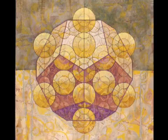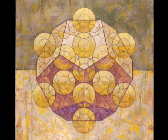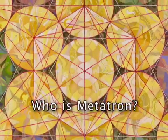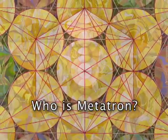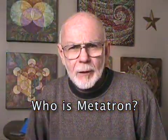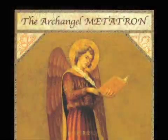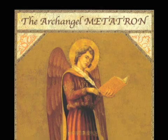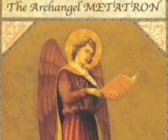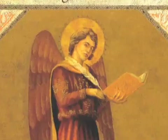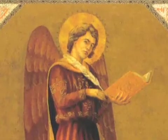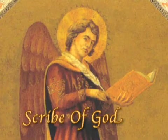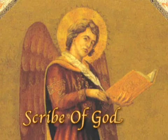So the first question is, who is this being known as Metatron? Where did he come from? If you investigate, you find that Metatron was an archangel who was mentioned in Islamic, Judaic, and Christian mythologies — medieval mythologies. He was considered to be the scribe of God.